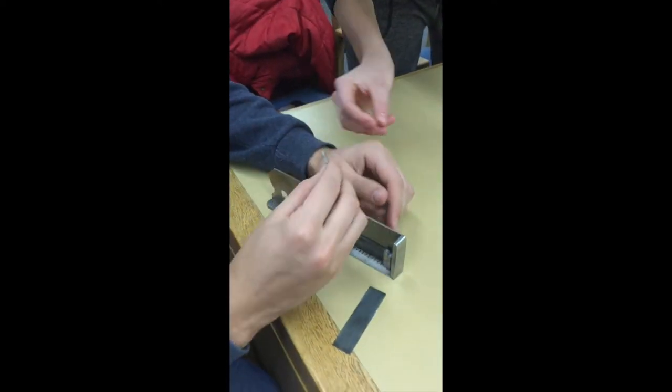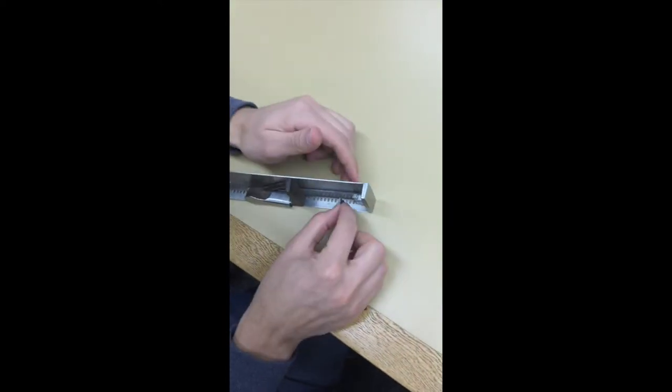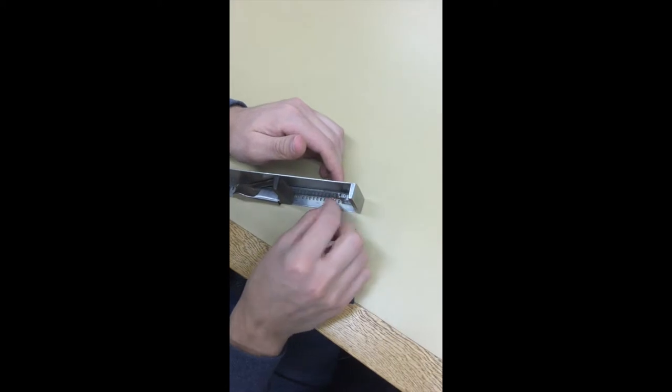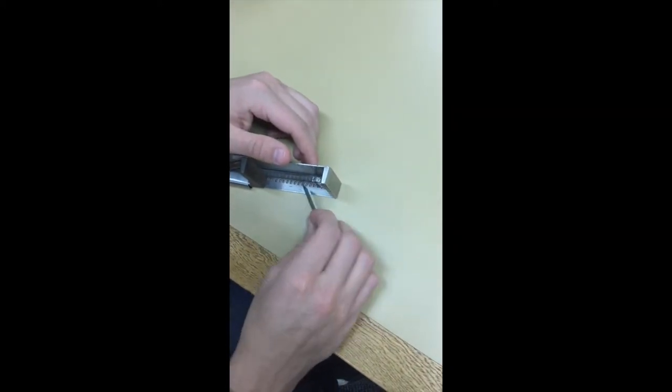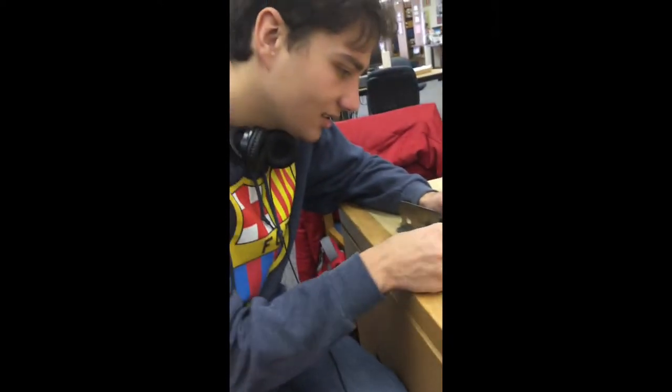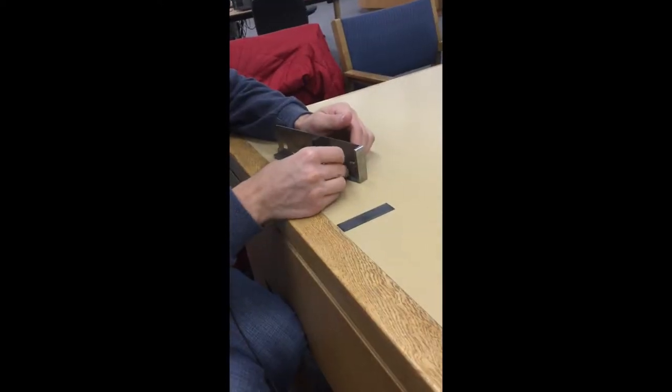While Maggie and Sydney took the lead on retrieving each letter block, Carl took on the role of arranging them. Carl's alignment of the letters and the phrase had to be precise to ensure that when they were stamped the text aligned uniformly and accurately.